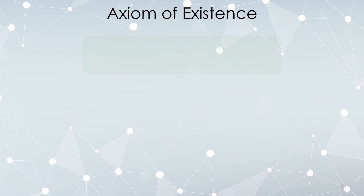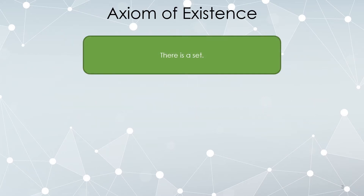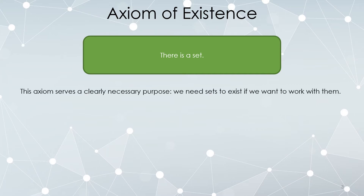First up: there is a set. This is our first axiom. A set exists — otherwise we would have nothing to talk about. You can kind of believe that this can't be proved from any previous axioms because there are no previous axioms. You just have to start off by saying there is a set. Now that we know there is a set, we can actually try to do stuff with it. There have to be sets in order to do set theory.